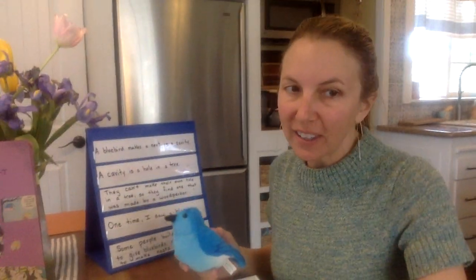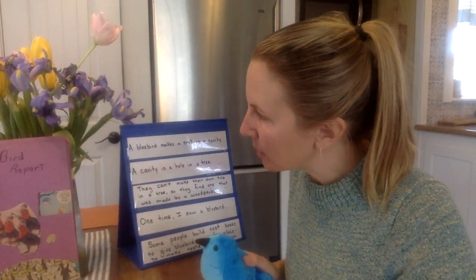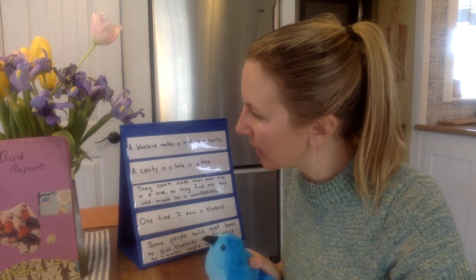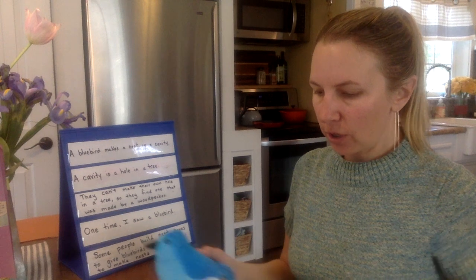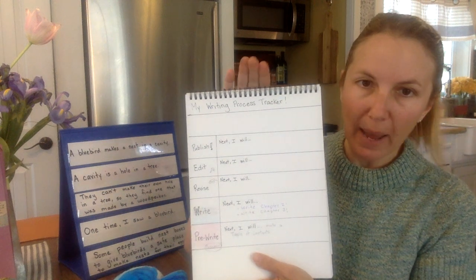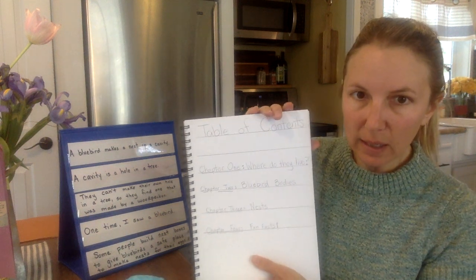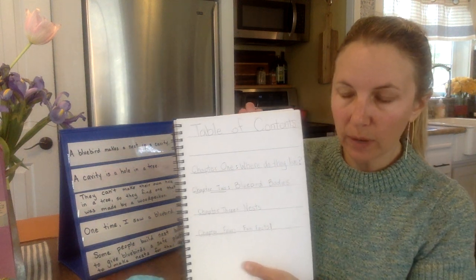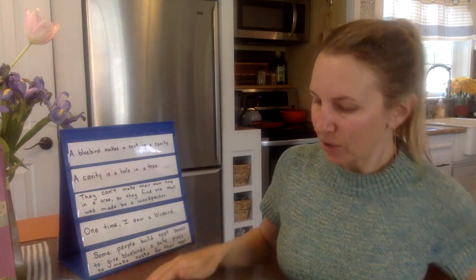Hi there, Mr. Bluebird and I are here. We're just sitting with my fabulous bird report from when I was a kid. We were making a plan and starting our writing for today. The things I have with me are my writing process tracker, my table of contents to keep me on track with what I wanted to write next, and here I've got some sentences that I've started to write.